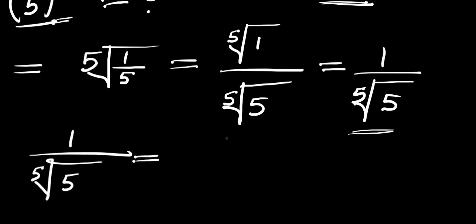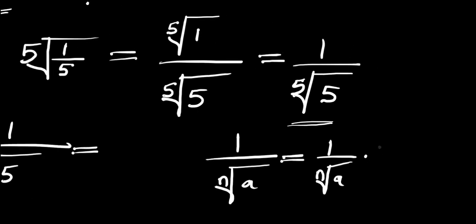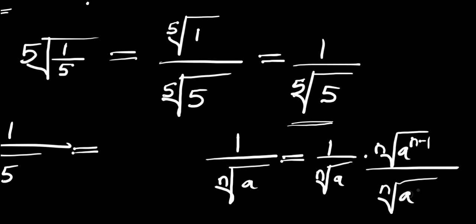Now we need to consider this other identity: if you have 1 divided by the n-th root of a, you can rewrite it as 1 divided by the n-th root of a, times the n-th root of a raised to the power of n minus 1, divided by the n-th root of a raised to the power of n minus 1.